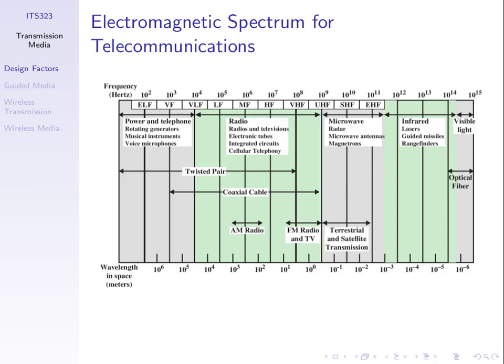AM radio uses frequencies around 1 MHz - ranging from the high 800s to high 900s kilohertz, so about 10^6 Hz. Terrestrial and satellite TV typically uses a wider range, usually several gigahertz up to around 10-15 GHz.